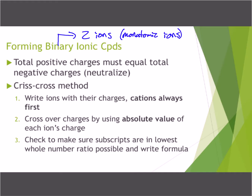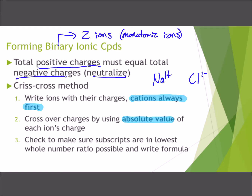Positive charges must equal the total negative charges, so we're neutralizing the charges — that's our whole idea with ionic bonding. We're going to use what's called the crisscross method. The cation is always first; cations are typically metals. We use the absolute value of each ion's charge. For example, if we have Na with a 1+ charge and Cl with a 1− charge, we take just the number — leaving the symbol behind — and cross it over as a subscript.